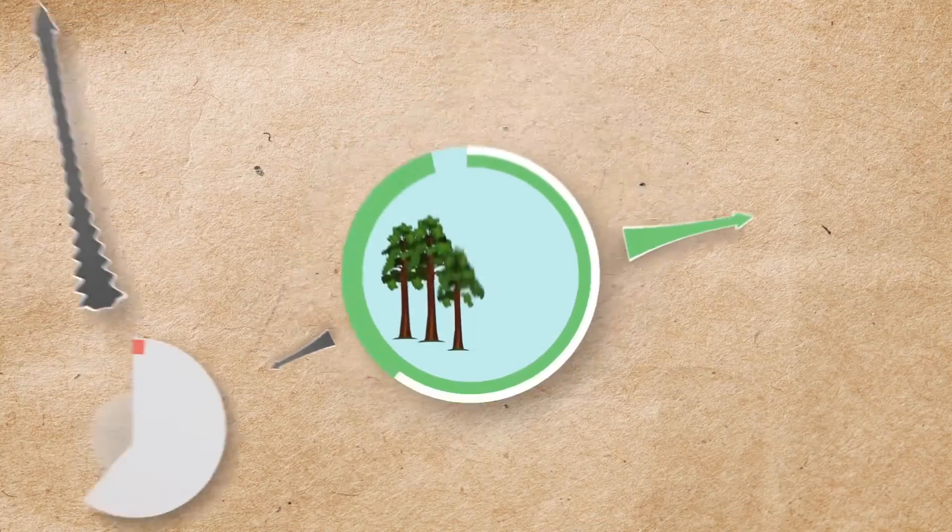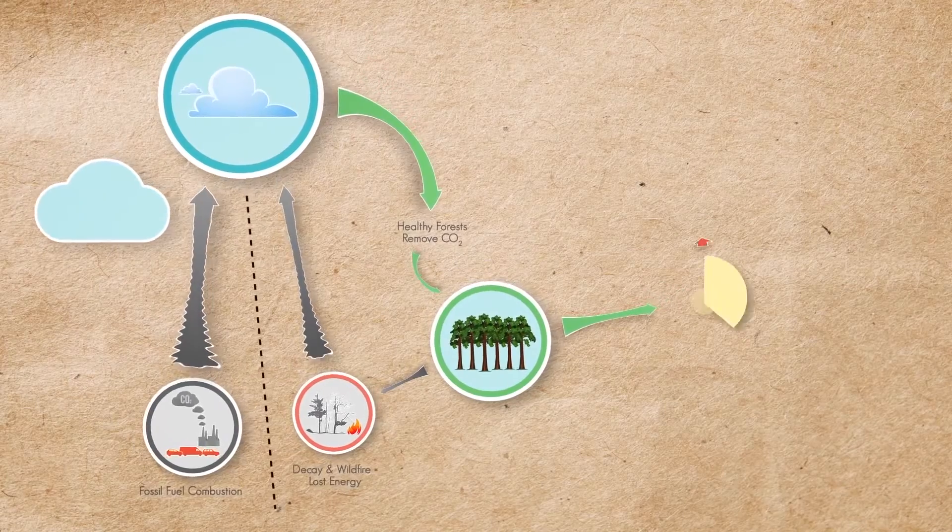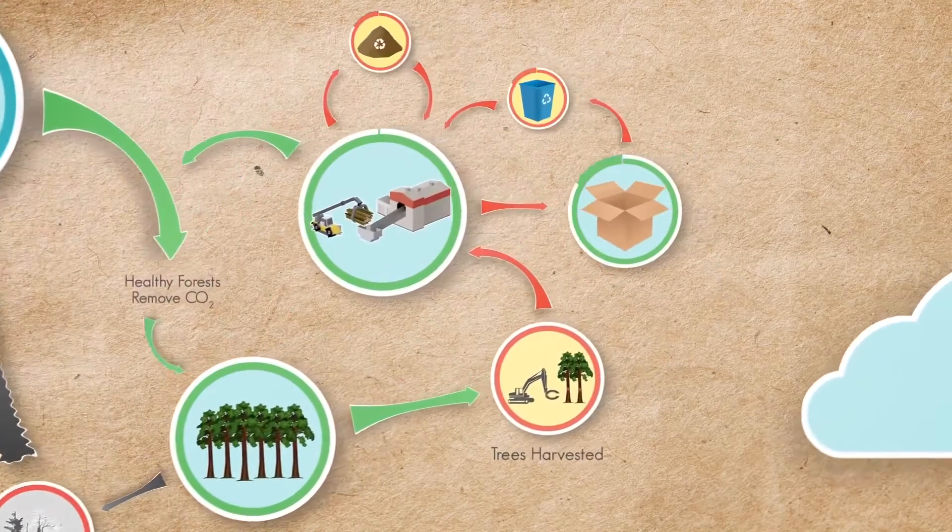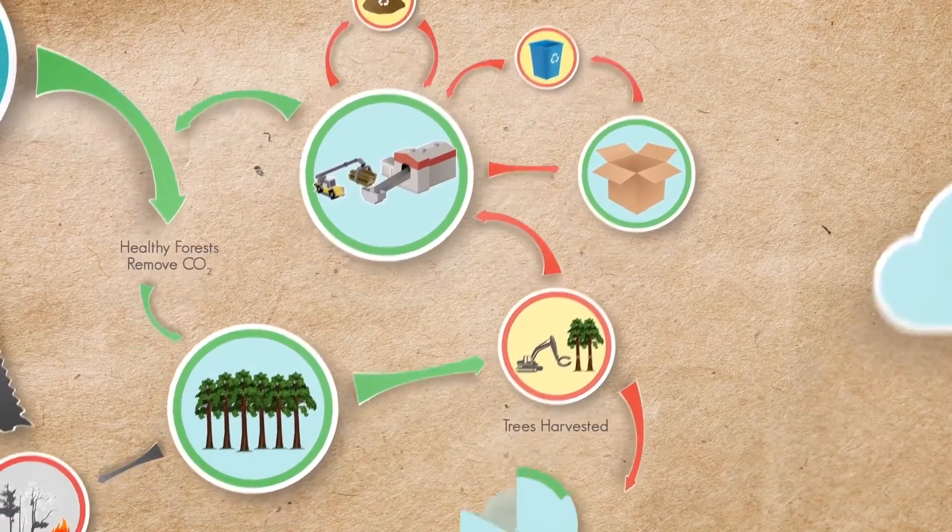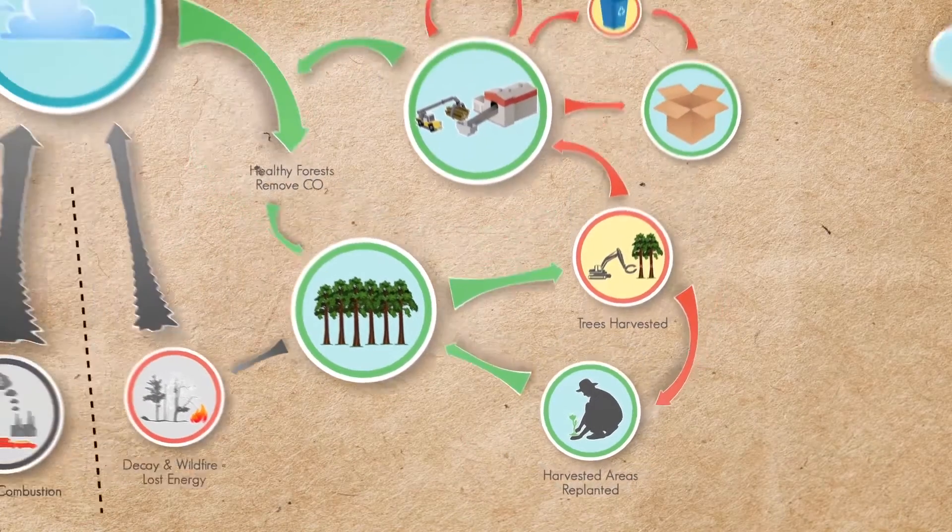Well, that's the basis of the forest products industry's role in the larger carbon cycle. Trees are harvested by manufacturers to make paper and wood products. Those trees are replaced with new trees that continue to absorb CO2.